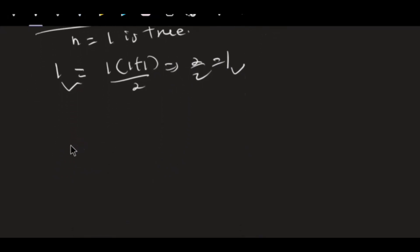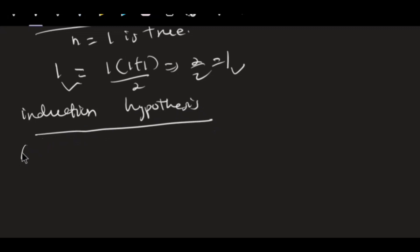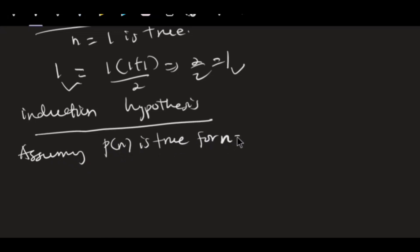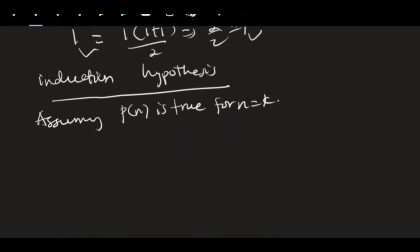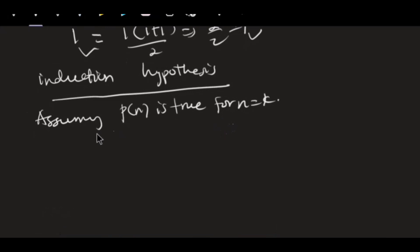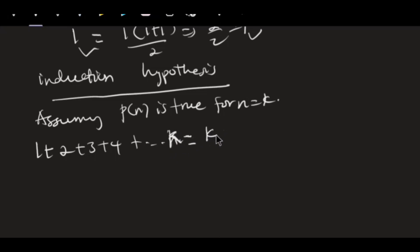We move to our induction hypothesis. For this step we are interested in assuming that the statement P of n is true for n equals k. At a point where n equals k, our statement is true, so the statement becomes one plus two plus three plus four plus k, and wherever we see n become k it is given as k times k plus one all over two.